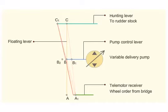When the steering wheel is moved to midships, the telemotor control will move the floating lever back to A, pulling the pump control rod to B2. The pump will discharge in the opposite direction, supplying pressurized oil to the other set of cylinders. This will turn the rudder in the opposite direction.